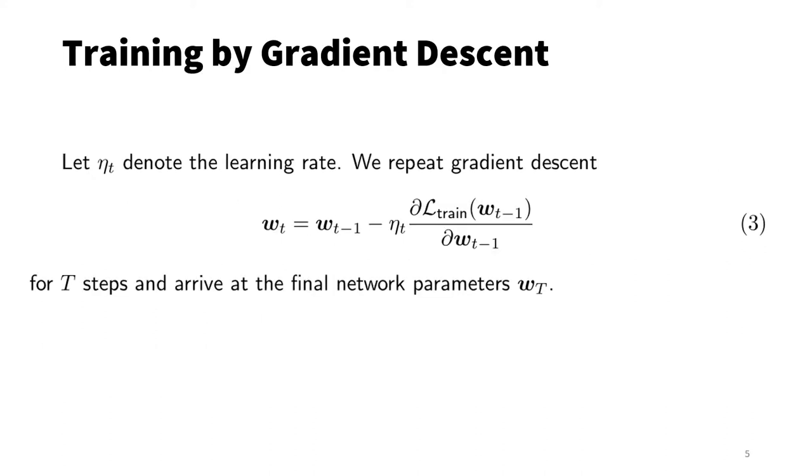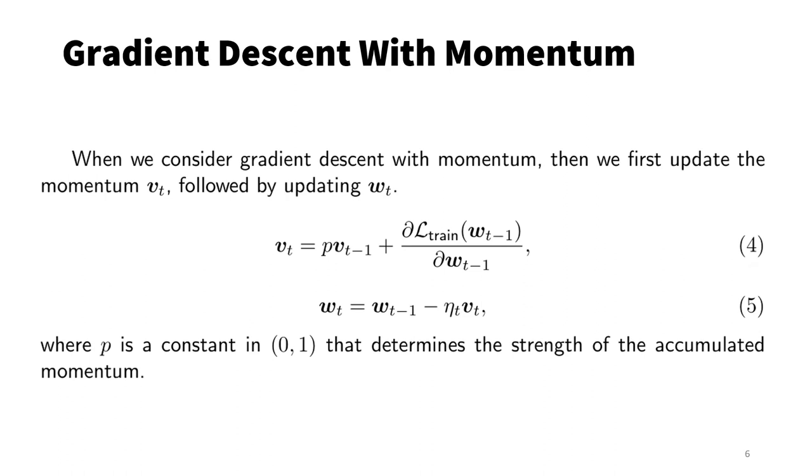We use the familiar gradient descent technique to optimize the loss function. At every iteration, we subtract the gradient multiplied by a small learning rate, eta t, from the current parameter W_{t-1}. This gives us W_t. We repeat this procedure for big T steps, which gives us the final parameter W_T. We also consider gradient descent with momentum. Here the historical gradients are accumulated into the momentum V_t. Then the parameter W_{t-1} is changed by the momentum. Here rho is a coefficient that is used to control the strength of the accumulated momentum.